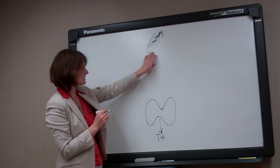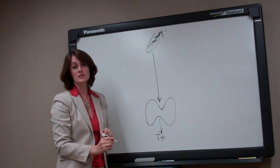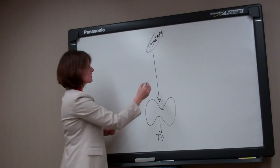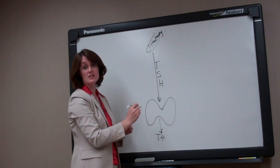How it regulates things is that the pituitary gland is what tells the thyroid gland what to do. And how it does this is by secreting a hormone called thyroid stimulating hormone, or TSH for short.